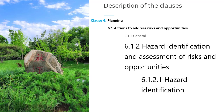Clause 6.1.2.1 requires that the organization shall establish, implement, and maintain a process for proactive hazard identification on an ongoing basis. The process of hazard identification shall consider all those activities which may cause or have caused the creation of hazards or risks.